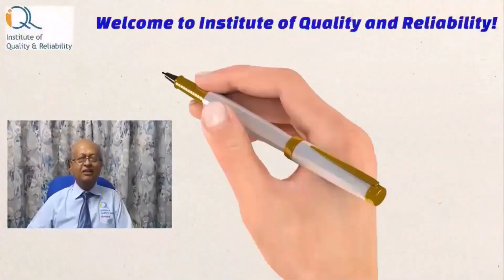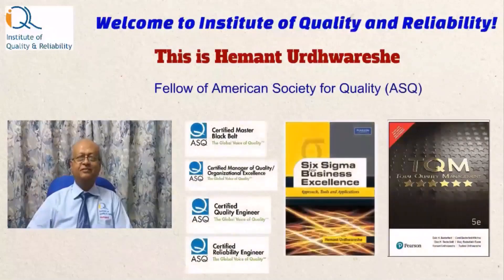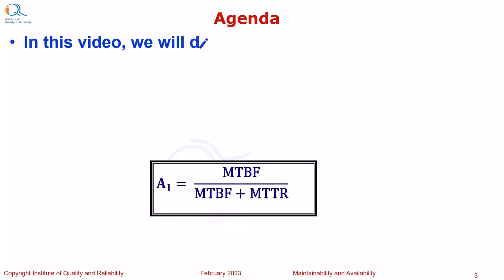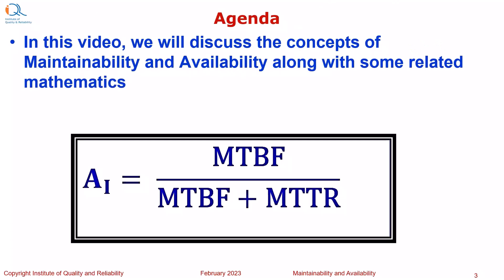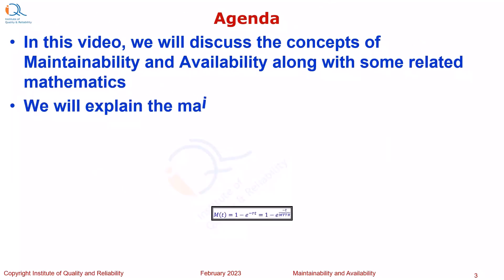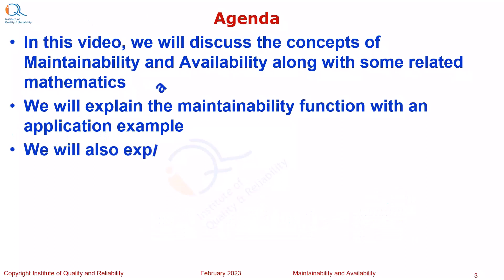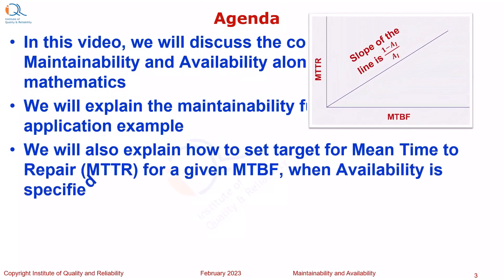Welcome to Institute of Quality and Reliability. Hi, this is Heyman. In this video, we will discuss the concepts of maintainability and availability along with some related mathematics. We will explain the maintainability function with an application example. We will also explain how to set a target for mean time to repair or MTTR for a given value of mean time between failures MTBF when availability of the system is specified by the customer.